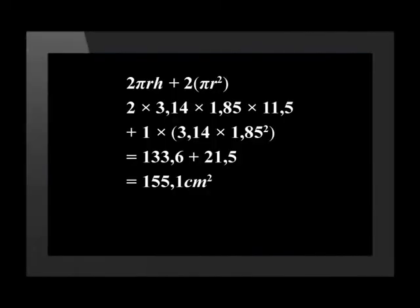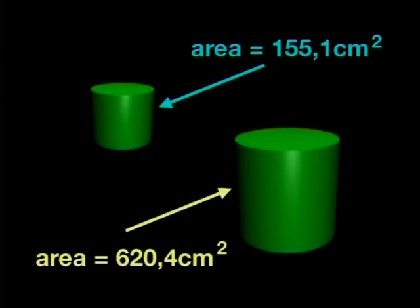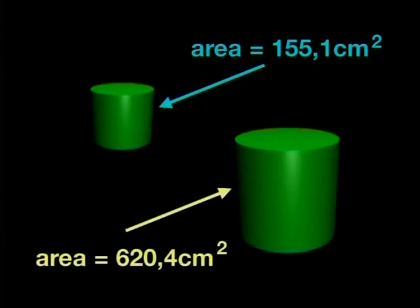So using the formula, it looks like our new surface area will be a quarter of the original surface area. Let's see what we get with our calculations now. 155.1 goes exactly four times into 620.4.